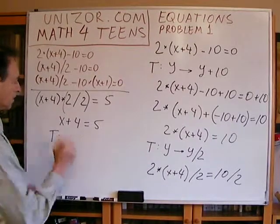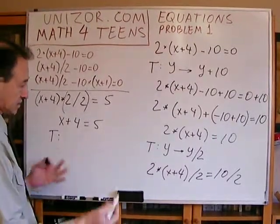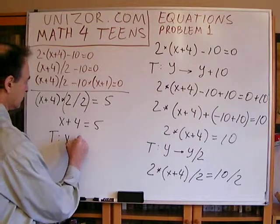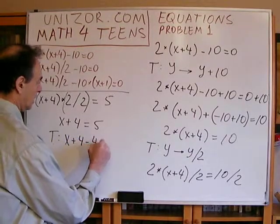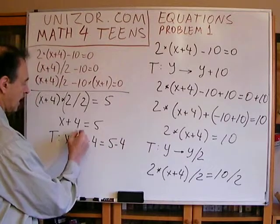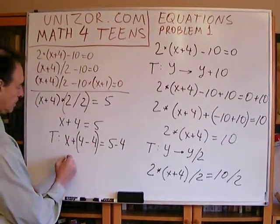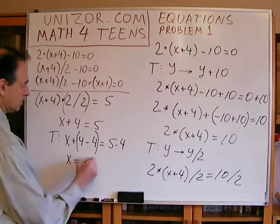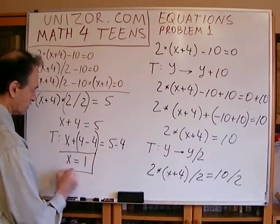The next invariant transformation is to subtract 4 from both sides: x plus 4 minus 4 equals 5 minus 4. Using the associative law and putting parentheses around it, I get x equals 1. This is the solution.